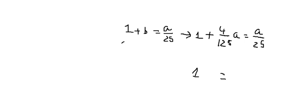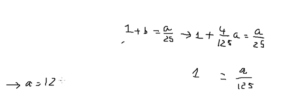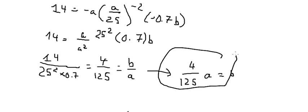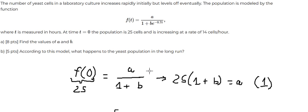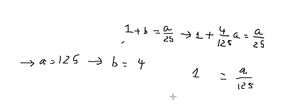So this one minus this one gives us 8 over 125. That means 8 in here equals 125. So we put 125 in here, and b equals number 4. After we get this, we can go back to the original equation and put all the numbers in here.